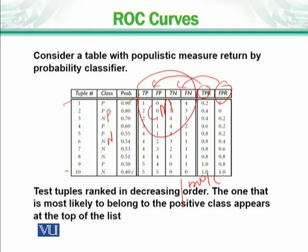Examples are available in the book, on internet sources, and will also be provided in assignments. You need to figure out how TP, FPR, TN, and FN are converted into true positive rate and false positive rate. The hint is that the formulas were discussed in the previous slide. You can also search on the internet — Wikipedia pages have the proper formulas. Implement those formulas in any programming language and the values will be calculated automatically.